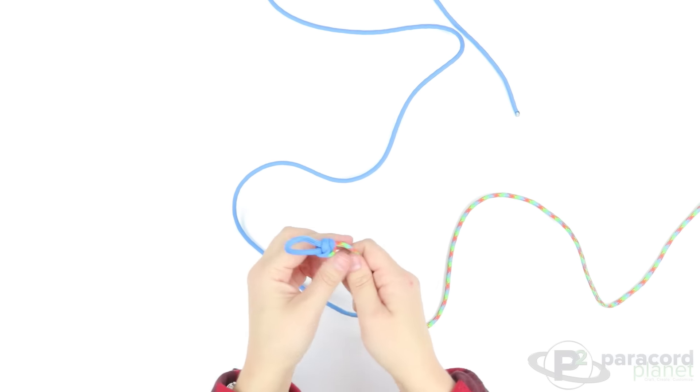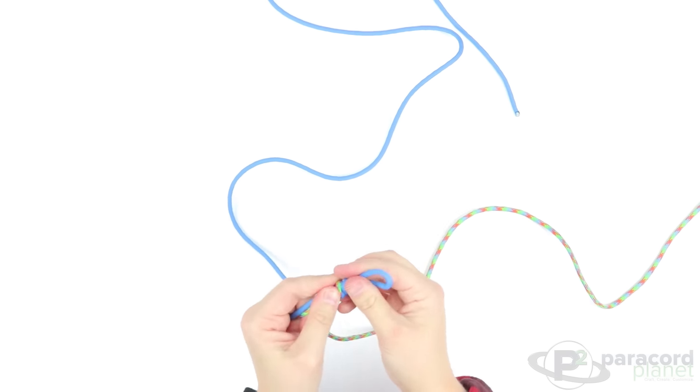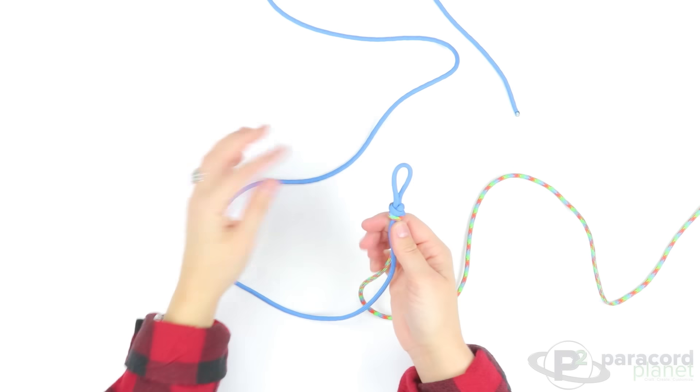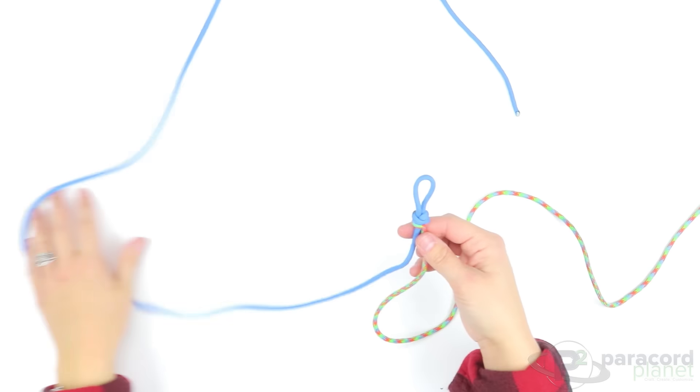Now one great thing about the snake knot is that you can reposition them very easily. You'll just loosen it up and kind of wiggle it around if something doesn't seem to be lining up the way that you want it to.